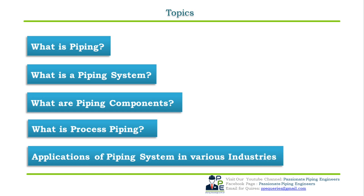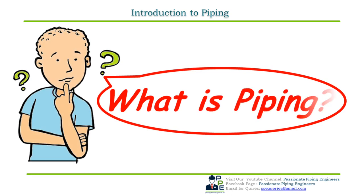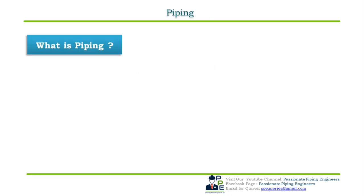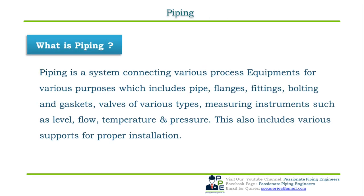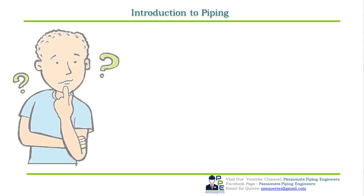So let's start with our first topic: what is piping? Piping is a system connecting various process equipments for various purposes, which includes pipe, flanges, fittings, bolting, and gaskets, valves of various types, and measuring instruments such as level, flow, temperature, and pressure. This also includes various supports for proper installation.